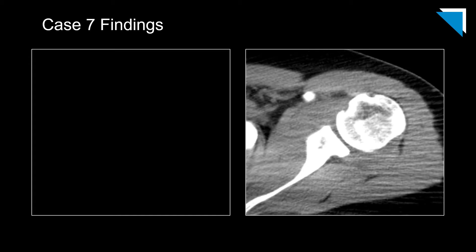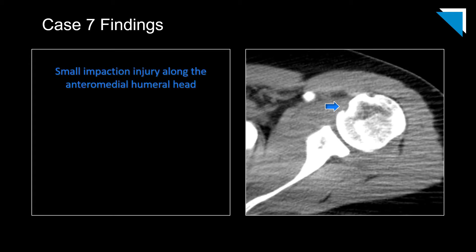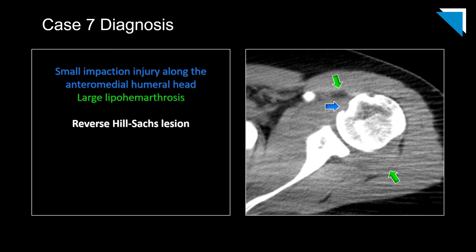Perhaps you appreciated the small impaction injury along the anterior medial aspect of the humeral head. If you're not familiar with the normal anatomy of the proximal humerus, you might mistake this for the bicipital groove. As mentioned when scrolling through the images, there is also a large lipohemarthrosis. Had you missed the impaction injury on the bone windows, this would have alerted you to the underlying pathology.